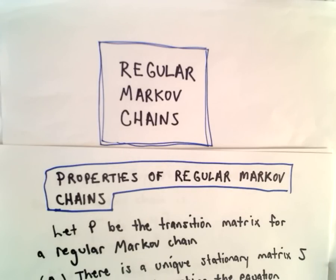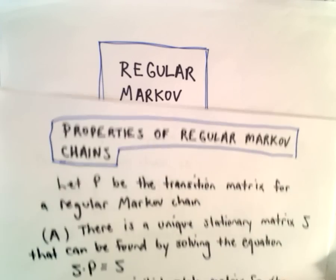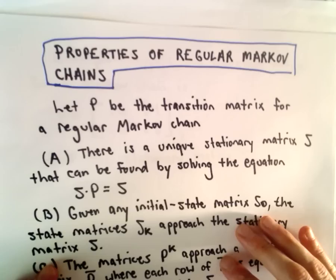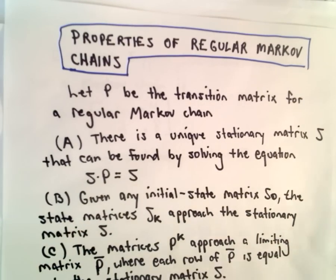Okay, so in our previous video, we made the claim that regular Markov chains have what's called a unique stationary matrix. We're not going to prove that, but what we are going to do in this example is talk about how we actually find that unique stationary matrix.